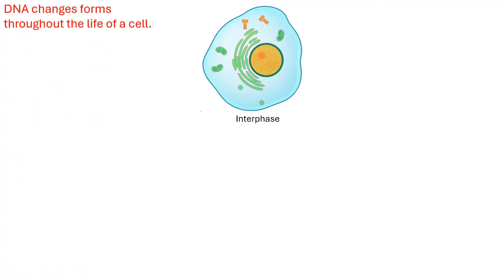DNA changes form throughout the life of a cell. In the stage of the cell cycle called interphase, DNA is in its chromatin form. This is the stage that lasts the longest — cells spend the majority of their existence in interphase, doing their job and performing their function. The chromatin needs to be in this form so it can be used to build the proteins the cell needs to survive.